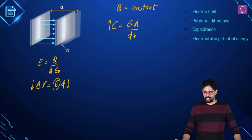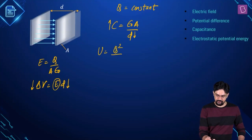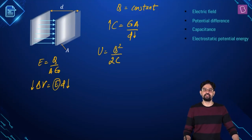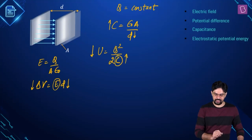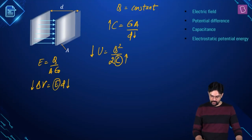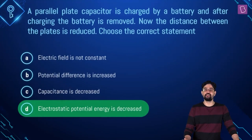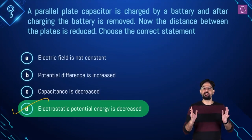The electrostatic potential energy stored is Q²/2C. Since Q remains constant and capacitance increases, the potential energy decreases. So the electrostatic potential energy stored by the capacitor goes down when the plates are brought closer. Option D is the correct answer: the electrostatic potential energy stored decreases when the plates are brought closer to each other.